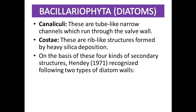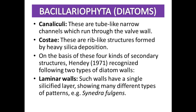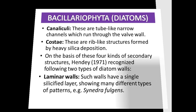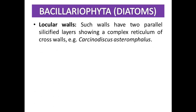On the basis of these four kinds of secondary structures, walls may be classified as unilocular — having a single layer showing many different types of patterns (e.g., Synedra vulgaris) — or locular — having two parallel single-wide layers showing a complex reticulum of cross walls.